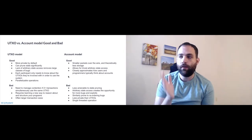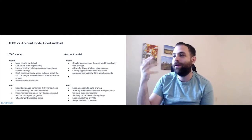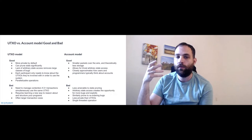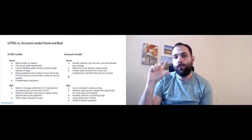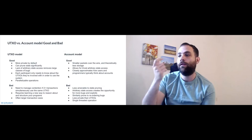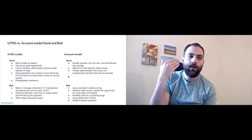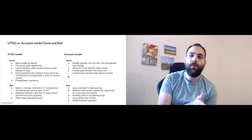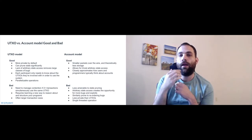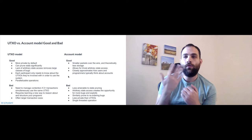On the flip side, account models are a little less available to state pruning, and the arbitrary state access allows for many more bugs and exploits. They're prone to reordering bugs and have less privacy than UTXOs. Because of this heavy interconnection between all transactions in an account-based model, they're largely limited to single-threaded operation — when a transaction comes in, the network must analyze and commit it before moving to the next.